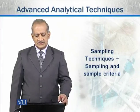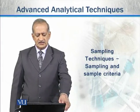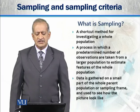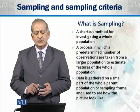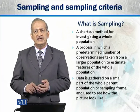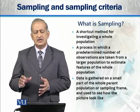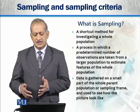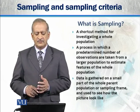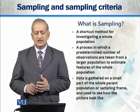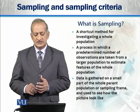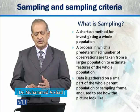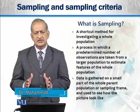Our next subtopic is Sampling and Sampling Criteria. Sampling is a shortcut method for investigating a whole population. Instead of conducting a study on the whole population, we take a sample. It is a process in which a pre-determined number of observations are taken from a large population to estimate features of the whole population.